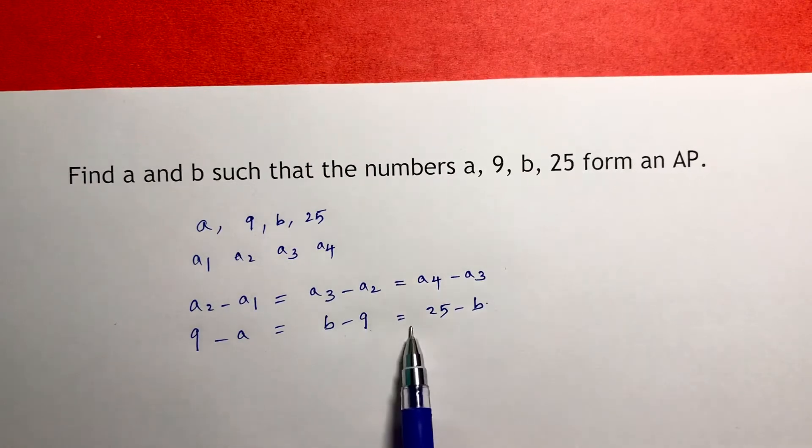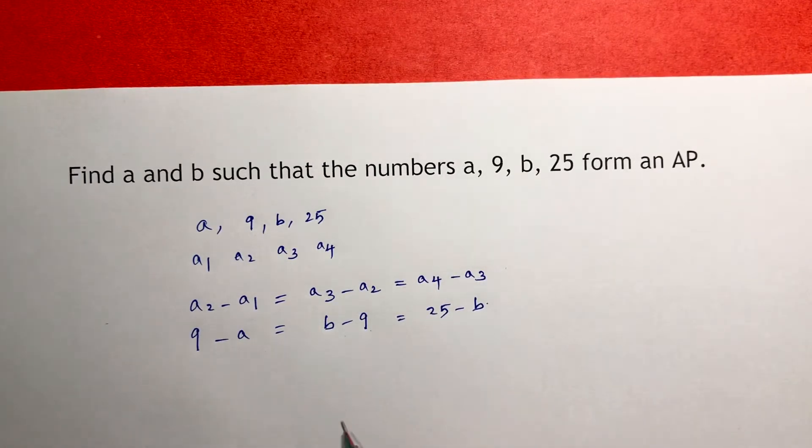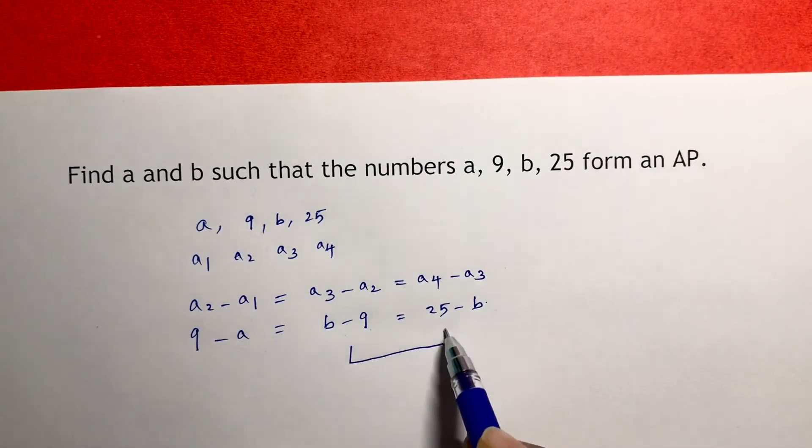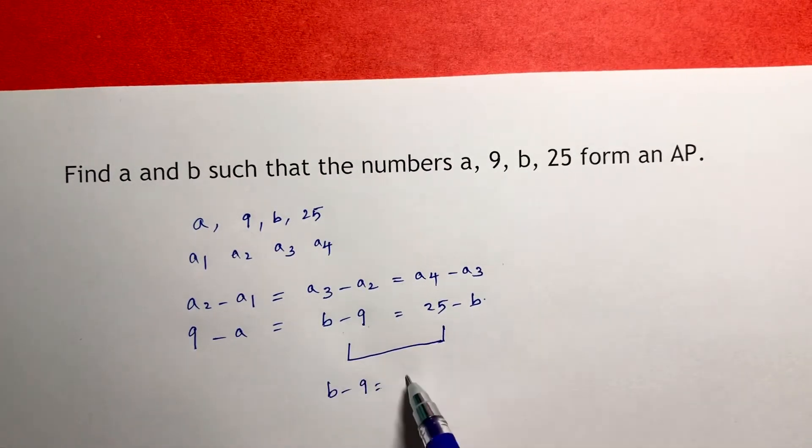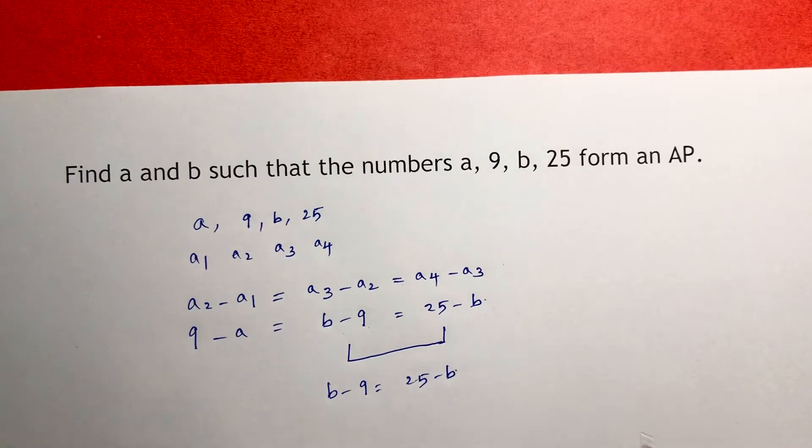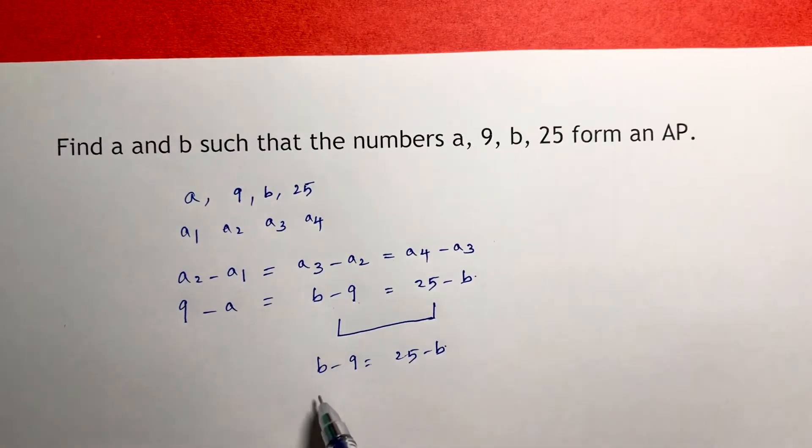First, equate these two and you will get one of the values. Here, b minus 9 equals 25 minus b. So on transposing, b plus b is 25 plus 9, which gives 2b equals 34.